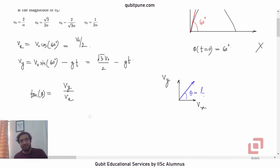We all learn this in vectors. Tan theta is vy upon vx. What is vx? v0 by 2. So, tan theta will now be equal to root 3 v0 by 2 minus gt upon v0 by 2. v0 by 2 will get cancelled from the first term. So, we will just have root 3 there, minus 2 gt upon v0. So we have got tan theta as a function of time.